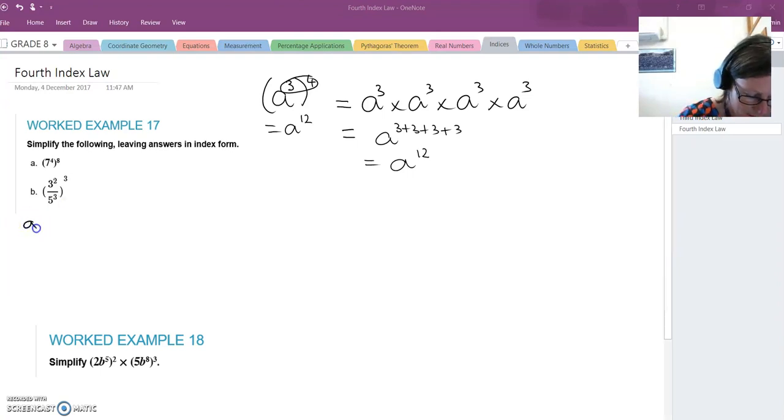So let's look at example a here, 7 to the power of 4 raised to the power of 8. We simply say 7 to the 4 times 8, which is 7 to the power of 32.